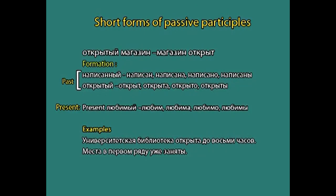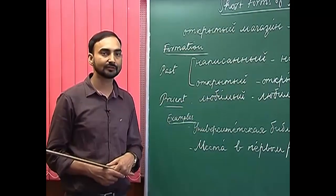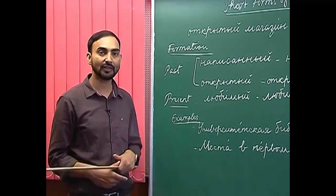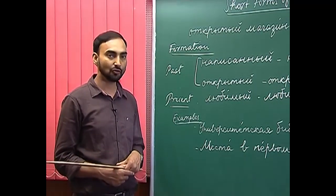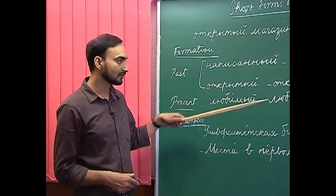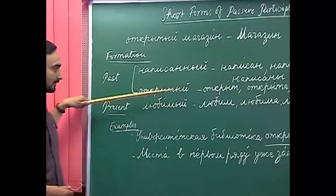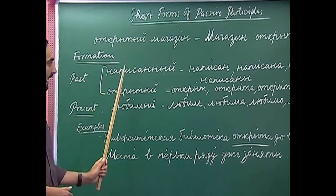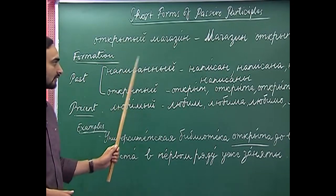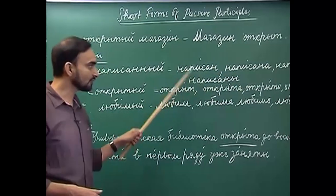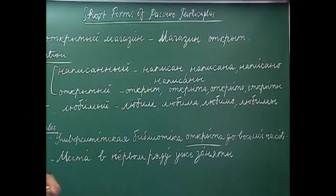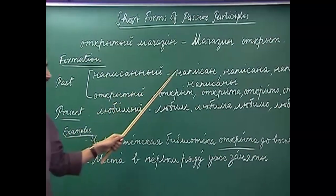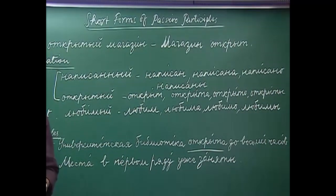Apart from this, we must mention that if the past participle passive ends with -yonny, the stress is different from the root word or full passive participle. For example, 'napisannyy' has stress on 'e', and all its short forms keep that same stress on 'e'. But if a past passive participle ends with -yonny, the stress changes — we will discuss this shortly.